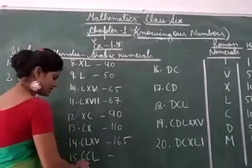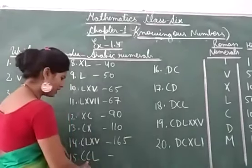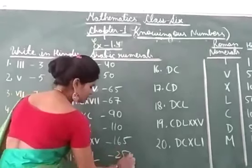So CCL: C and C 100, 100, 200 and 50, 250.